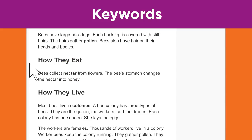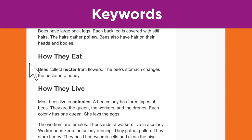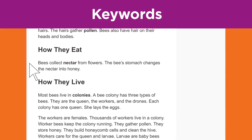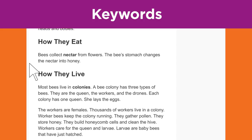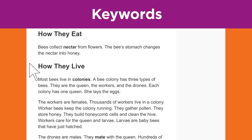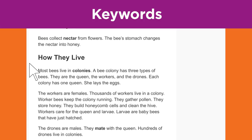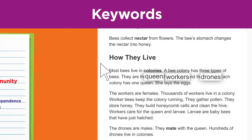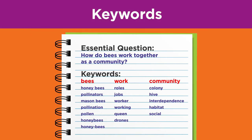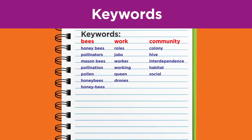On the other hand, from the section 'how they live,' we learn about three specific roles that bees have in a colony: queen, workers, and drones. These are excellent words to add to your keyword list.